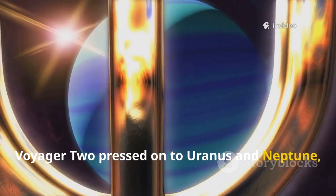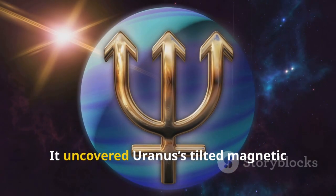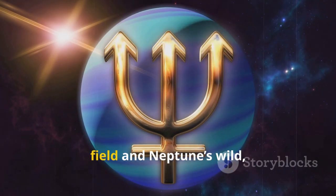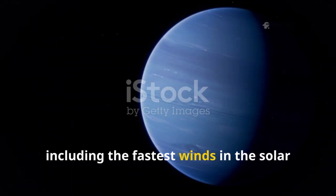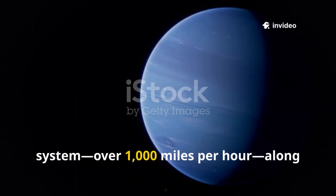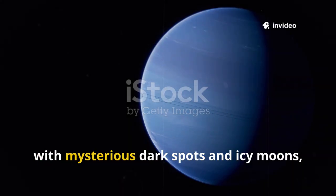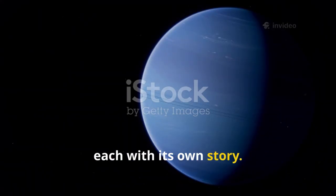Voyager 2 pressed on to Uranus and Neptune, the most remote giants. It uncovered Uranus's tilted magnetic field and Neptune's wild, raging storms, including the fastest winds in the solar system, over 1,000 miles per hour, along with mysterious dark spots and icy moons, each with its own story.